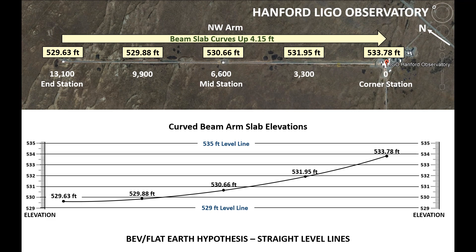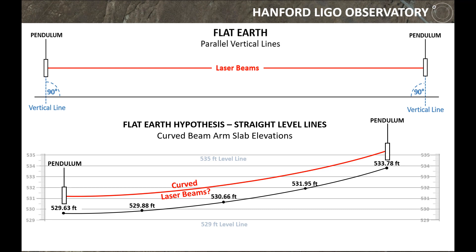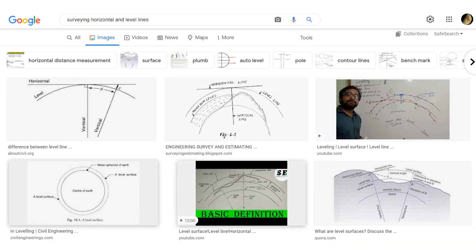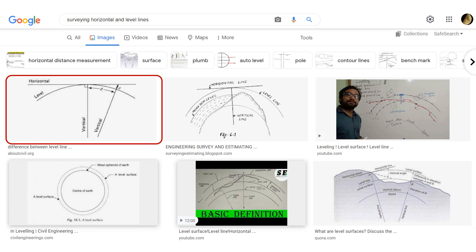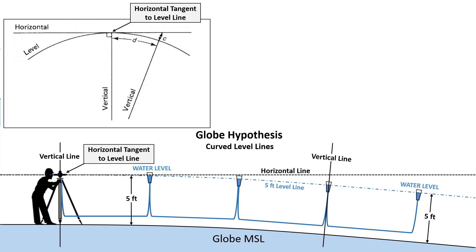In fact it curves up over four feet from one end to the other. Flat Earthers did argue that LIGO would only work on a Flat Earth because that's the only way those mirrors would be parallel to each other as they hung from the pendulum. But you gotta wonder — is LIGO using curved laser beams? Now when you Google 'surveying horizontal and level lines' and click images, these diagrams show up, and they match the graphic I drew for the globe hypothesis of curved level lines.